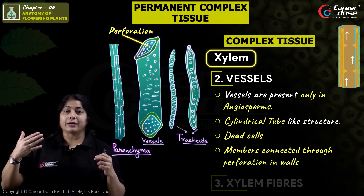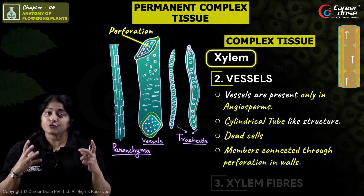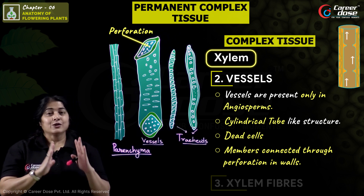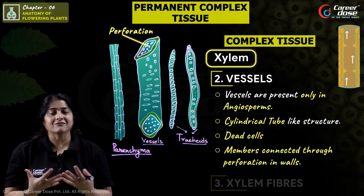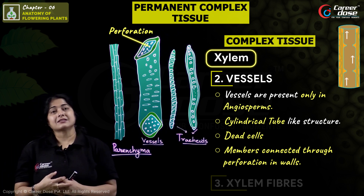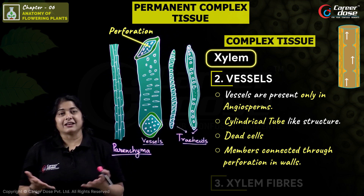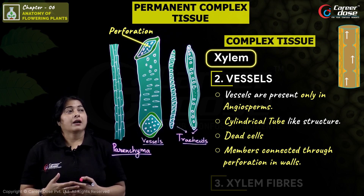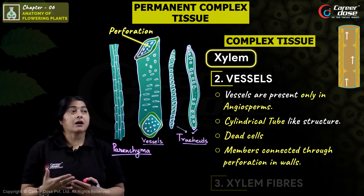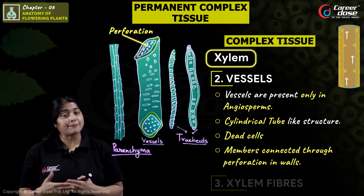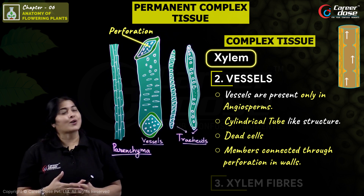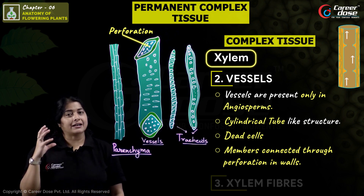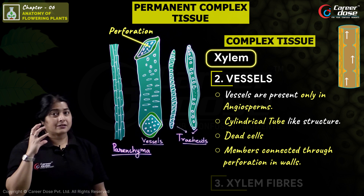When phloem is formed, it also has tubular structures called sieve tubes, which are a different type of pipe through which food flows. So just as a city has water pipelines, plants have xylem pipelines made of tracheids and vessels to conduct water and minerals, and phloem with sieve tubes to conduct food.